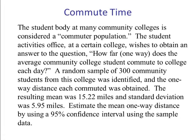Our last example. The student body at many community colleges is considered a commuter population. The student activities office at a certain college wishes to obtain an answer to the question: how far one way does the average community college student commute to college each day? A random sample of 300 college students from this college was identified and the one-way distance each commuter was obtained. The resulting mean was 15.22 miles and the standard deviation was 5.95 miles.